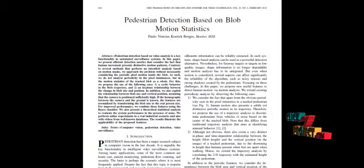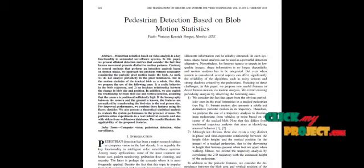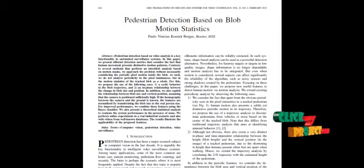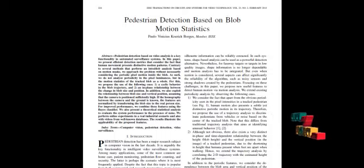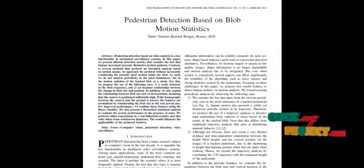The mean or median of a series of images removes the background. Every pixel intensity value in the video can be modeled using a Gaussian mixture model. Similarly, we can extract the backgrounds using different methods, but we are extracting using the frame differencing method.